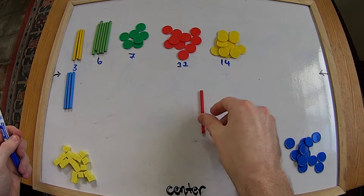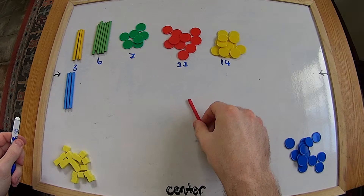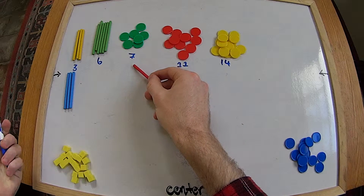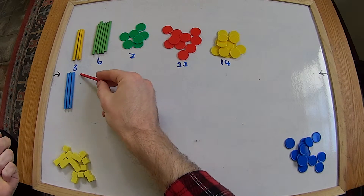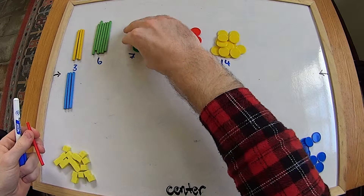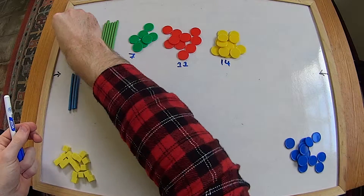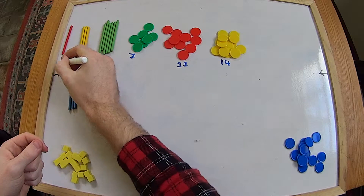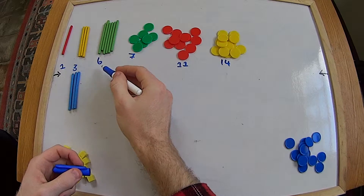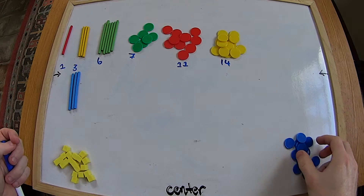How about our red sticks? One - just one red stick! Well, that's a lot less than fourteen, a lot less than eleven, less than seven, less than six, and even less than three. So we can slot our one red stick right down at the end here. Now we're going: one, three, six, seven, eleven, fourteen.